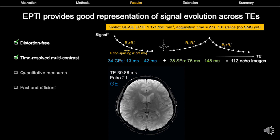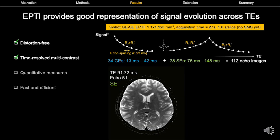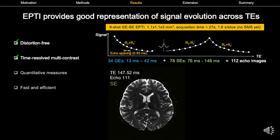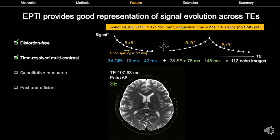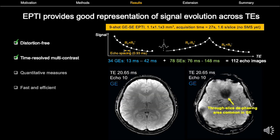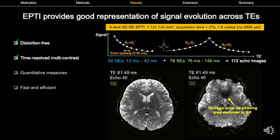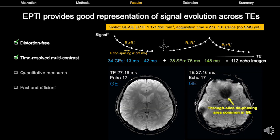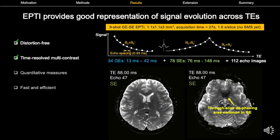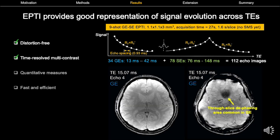To show the time-resolving capability of EPTI, we acquired data using a nine-shot gradient and spin echo EPTI at 1.1 mm in-plane resolution within 27 seconds. This gives us 112 images including both gradient and spin echo, providing signal evolution information at different echo times as seen in the movie. Looking at a lower slice at the bottom of the brain where there are usually more distortions, EPTI still works well and gives distortion-free images. Signal changes in through-slice dephasing areas in gradient echo show an accurate representation of the signal across gradient and spin echo time points.